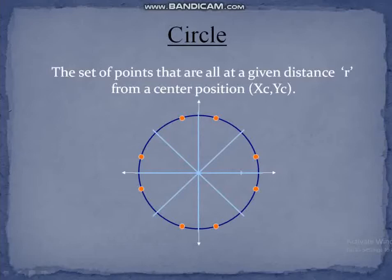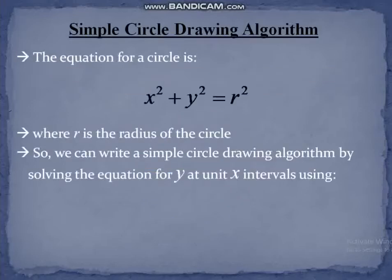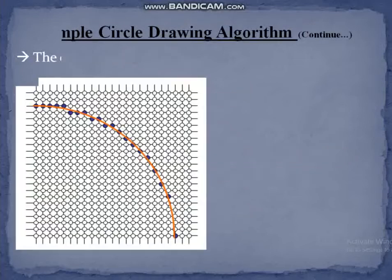First of all, we all know that circles are the set of points that are all at a given distance R from the center position. The equation of a circle is x² + y² = r², where we can simply write y = ±√(r² − x²). So in the simple circle drawing algorithm, what we are doing is just calculating the value of y from the value of x and r.